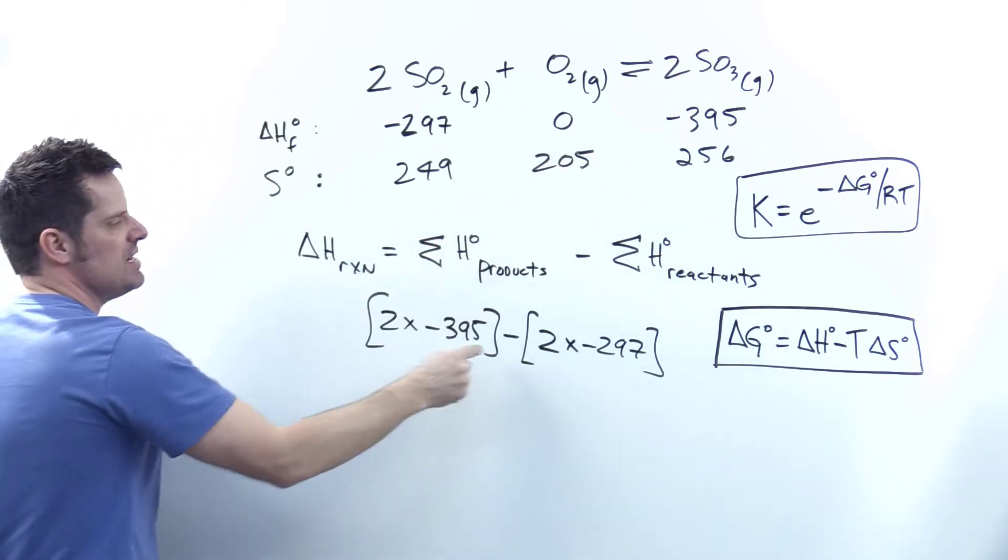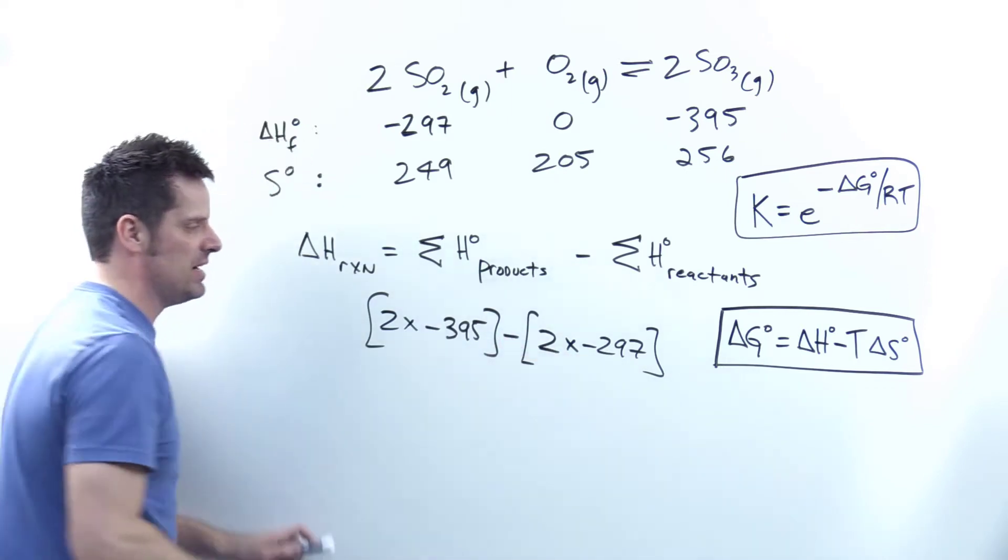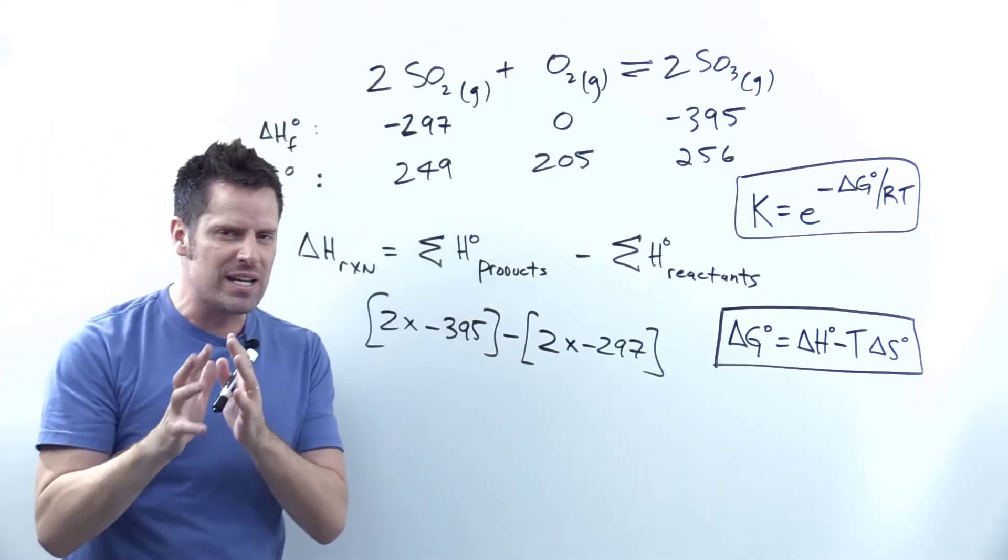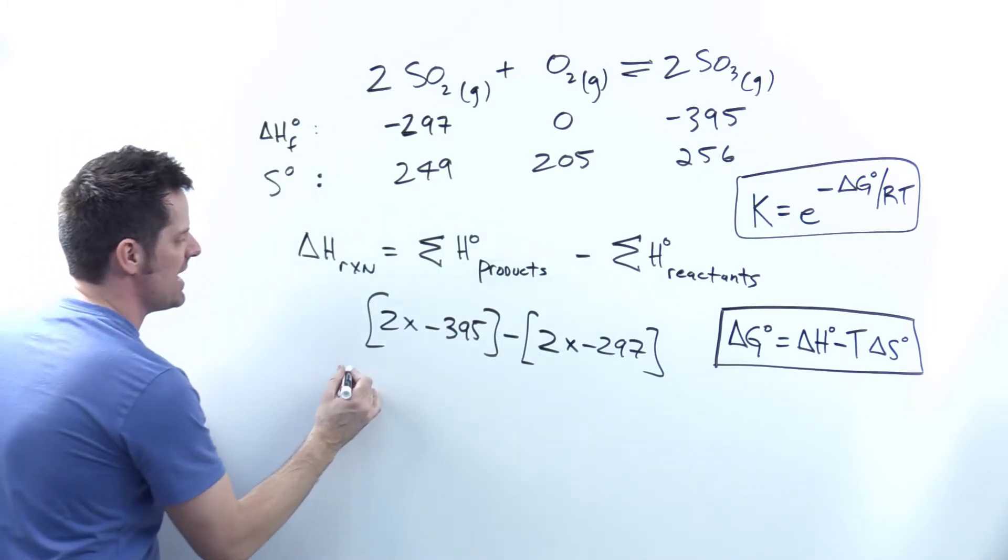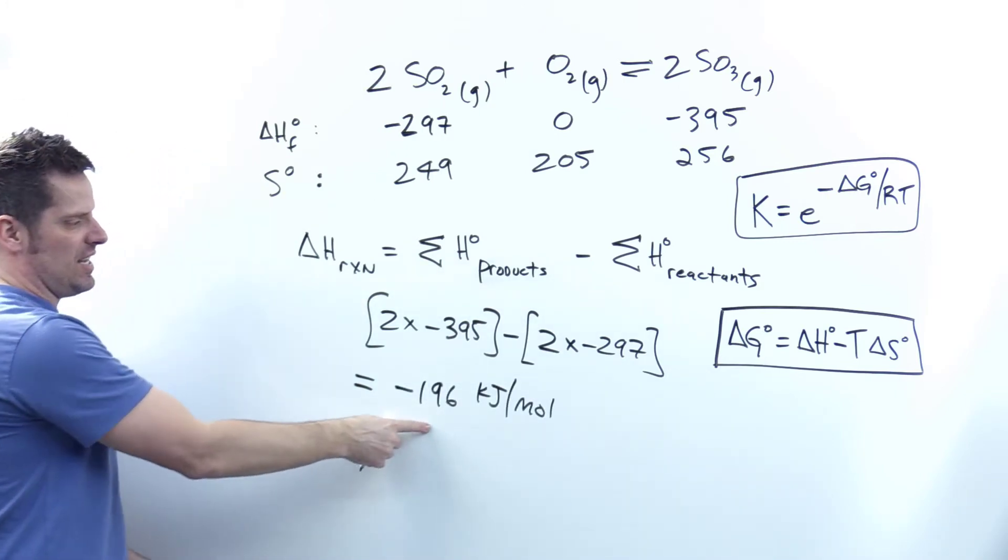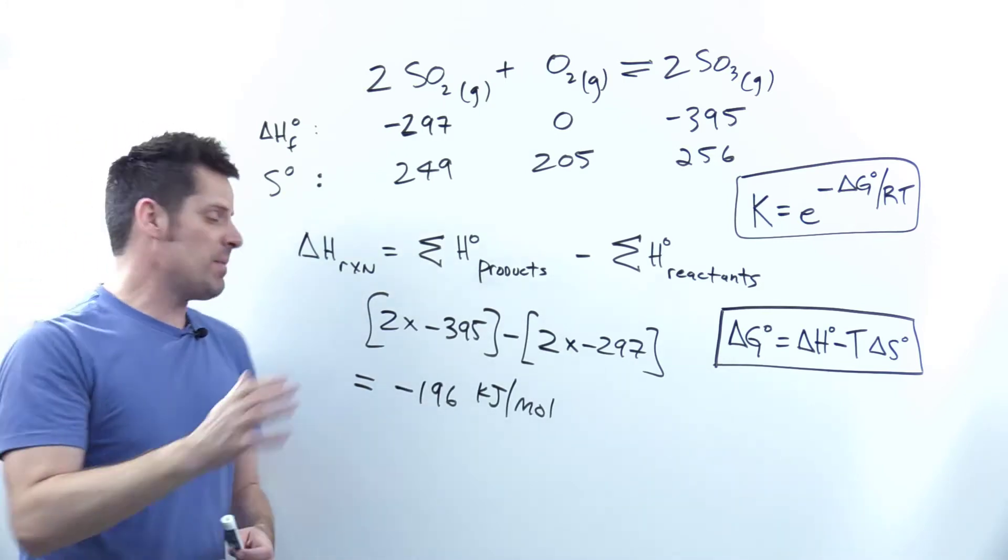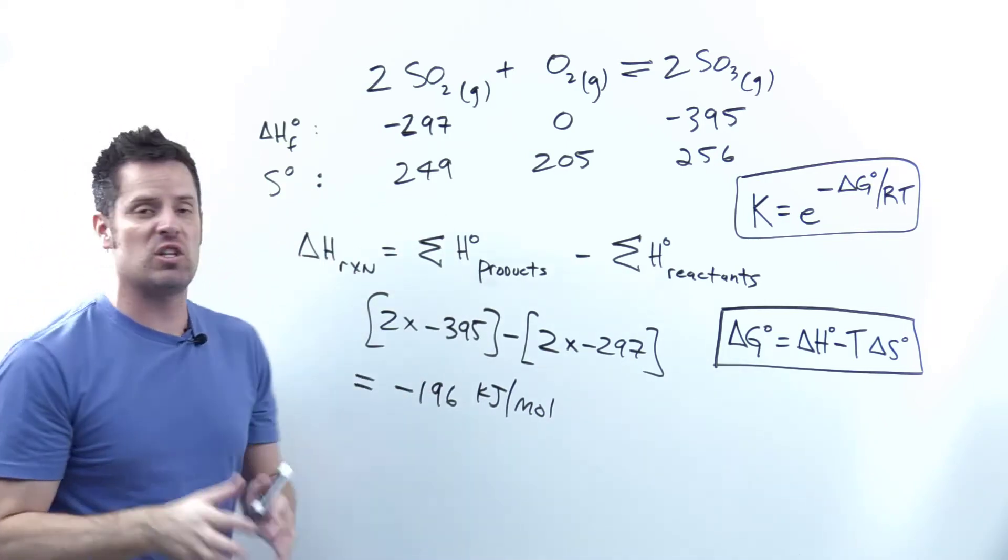Here I've got the sum of all my delta H as product minus that of reactants. Make sure you don't mix up your signs. Enter them carefully in your calculator and you should end up getting for delta H negative 196 kilojoules per mole.